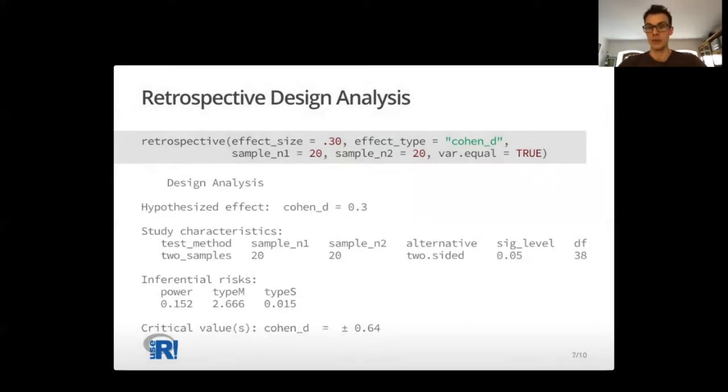In the output, we have a summary about the hypothesized effect and the study characteristics, in particular the test method, the study sample size, the alternative hypothesis, and the significance level.